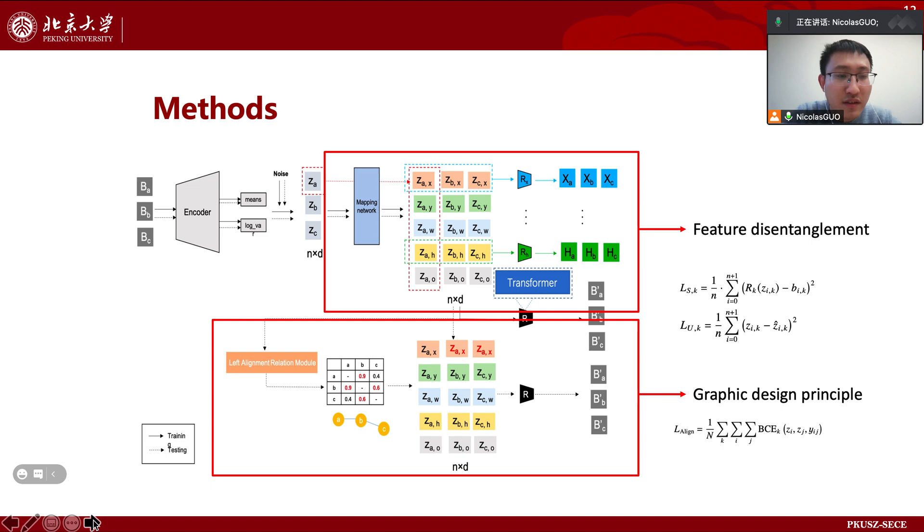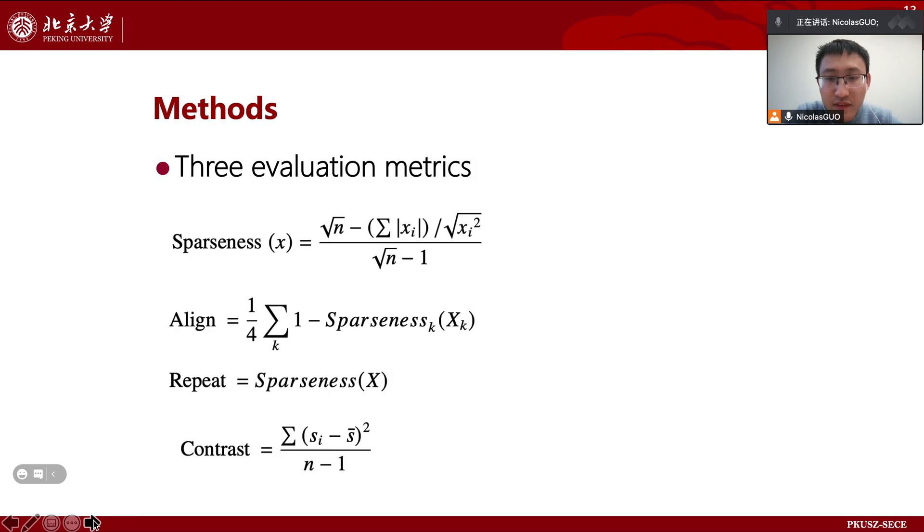This is the loss function we used to introduce these two strategies. In addition, we further combined the principles of graphic design, thus introducing three evaluation metrics, which are sparseness, alignment, repeat, and contrast, which further enrich the evaluation of graphic design generation tasks.